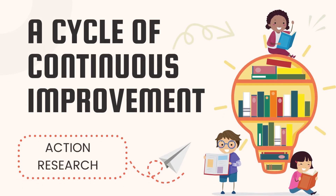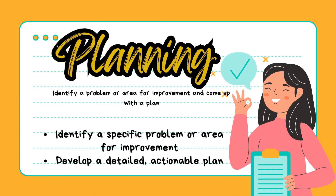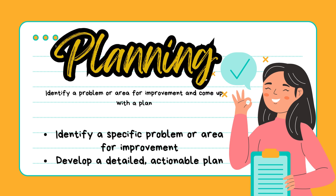Here's how the action research cycle works. Step 1: Planning — identify a specific problem or area for improvement. Pinpoint an issue affecting student learning, classroom management, or instructional methods. Develop a detailed, actionable plan to address the identified issue. This plan should outline clear goals and objectives, describe the interventions or instructional strategies you will use, specify when and how these will be implemented, and identify the resources and supports needed.